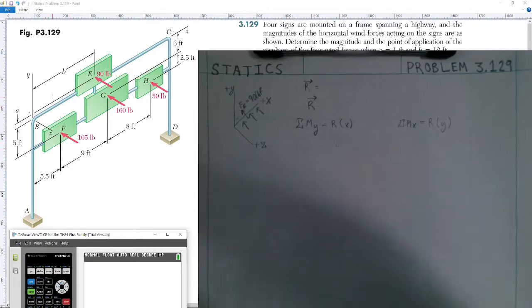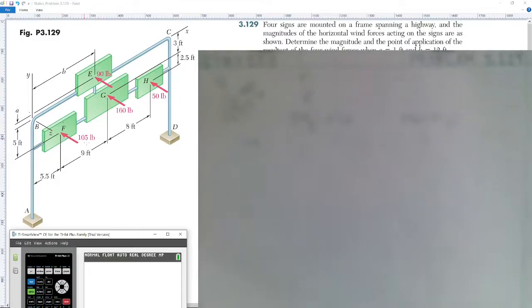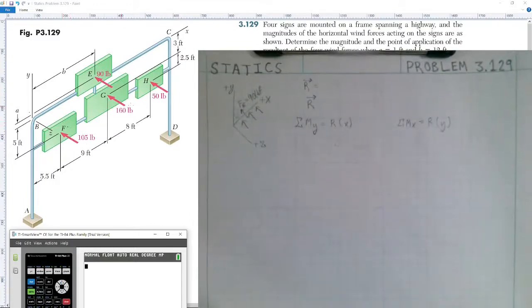we have 105 pounds at point F, 160 pounds at point G, 50 pounds at point H, and 90 pounds being applied at point E. I would notice the way this diagram is drawn that the forces are acting into the page along the negative Z direction, and the X axis is pointing into the page as well, which is different than what we're normally accustomed to with the orientation of the axis.